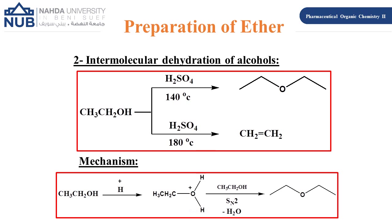The second method to prepare ethers is intermolecular dehydration of alcohols. For example, ethanol reacted with concentrated H₂SO₄ at 140°C gives diethyl ether. At higher temperature (180°C), an alkene is obtained instead. The mechanism involves ethanol reacting with H₂SO₄, protonating the OH group to form an oxonium intermediate, which then reacts with another ethanol molecule by SN2, eliminating one water molecule and forming diethyl ether.